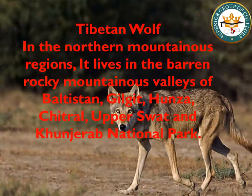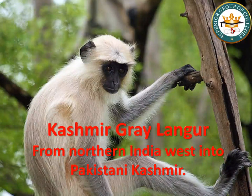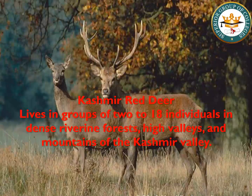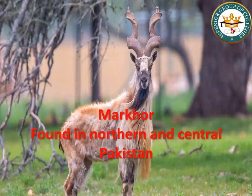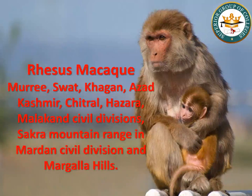Next is Tibetan wolf. In Pakistan, two grey wolf species are present. The Tibetan wolf is in northern rocky mountainous areas — Baltistan, Gilgit, Hunza, Chitral, Upper Swat, and Khunjrab National Park. The other species is the Indian wolf, found in southern Pakistan regions. Next, Kashmir grey langur is present in Pakistani Kashmir and is enlisted as a threatened species in IUCN. Kashmir red deer is found in the Kashmir valley mountains and riverine forests. Markhor is the national animal of Pakistan, found in northern and central Pakistan. Rhesus monkey has wide distribution, found in Murree, Swat, Kagan, Azad Kashmir, Chitral, Hazara, Malakand Division, Sakra mountain range in Mardan, and Margala Hills.